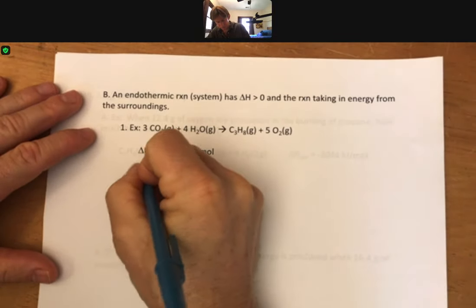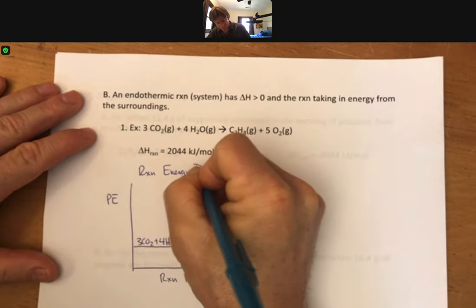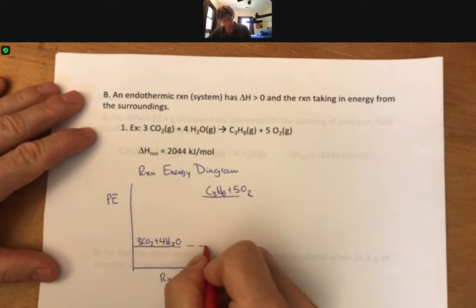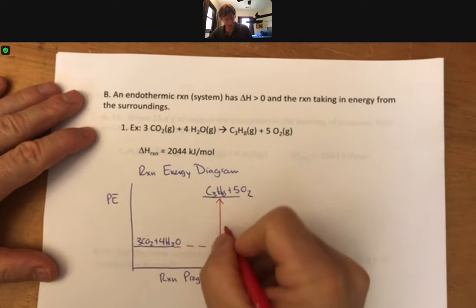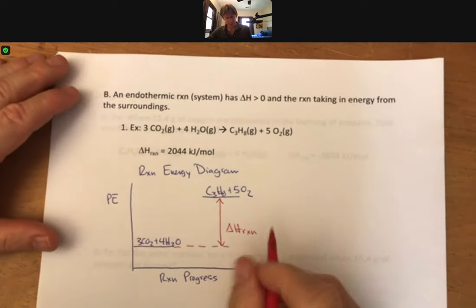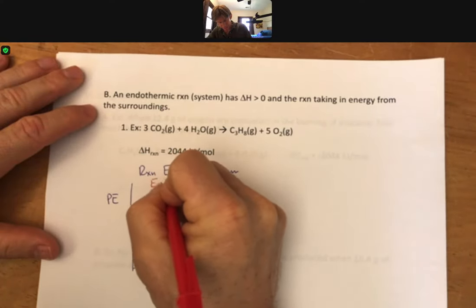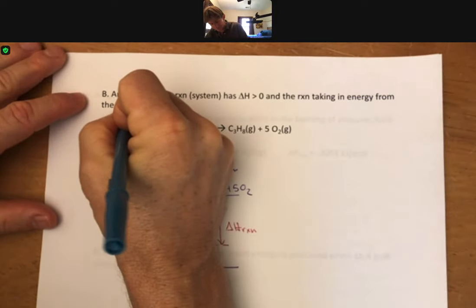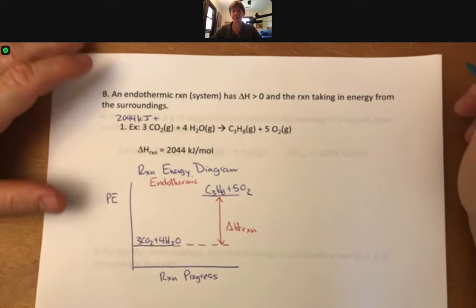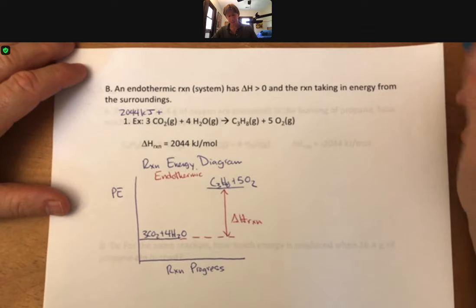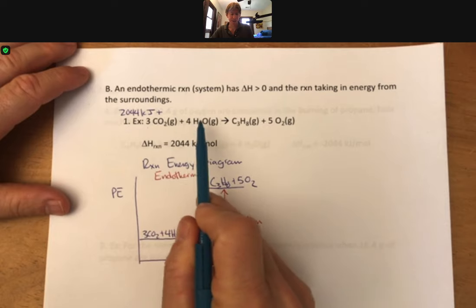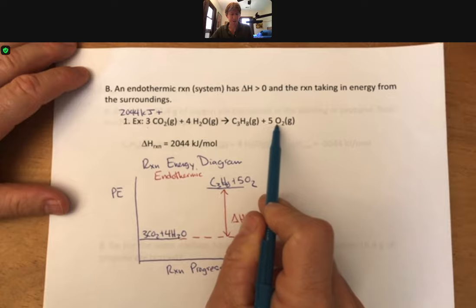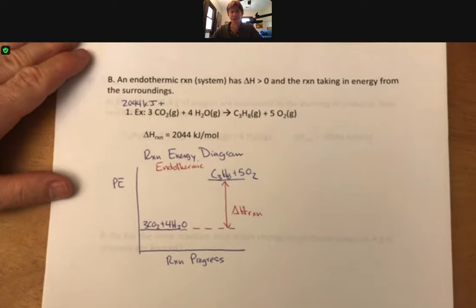And this is a reaction energy diagram. The difference in height is still delta H reaction. And okay, so same picture. This is for endothermic. And the heat, which the energy which was on the same side as the carbon dioxide and the H2O, is still on the same side as the CO2 and the H2O. And what we're trying to say with this is that if you want to turn three moles of carbon dioxide and four moles of H2O gas into propane and five moles of oxygen, you need to add 2044 kilojoules of energy to make that happen.